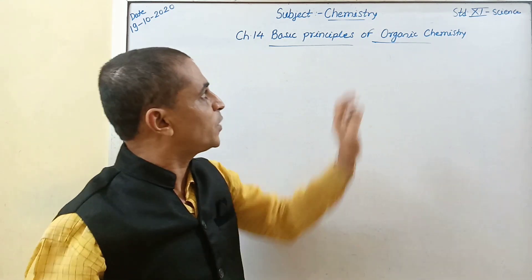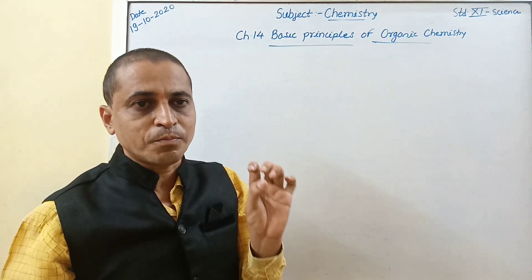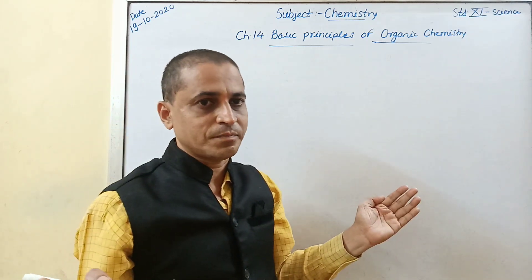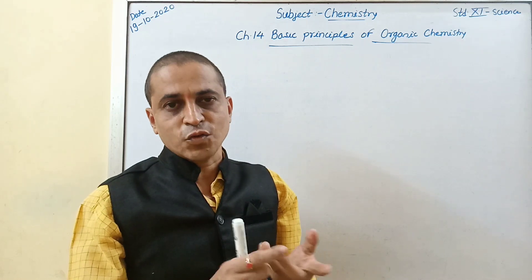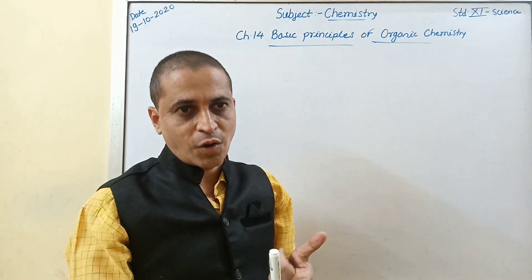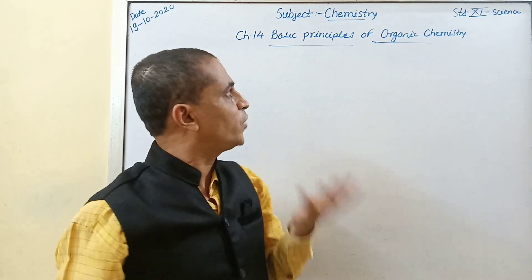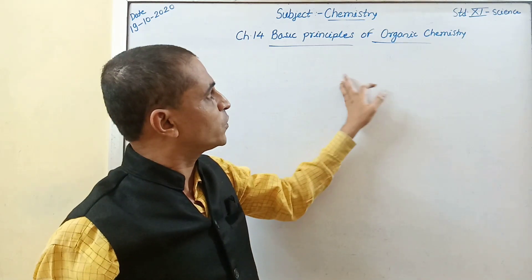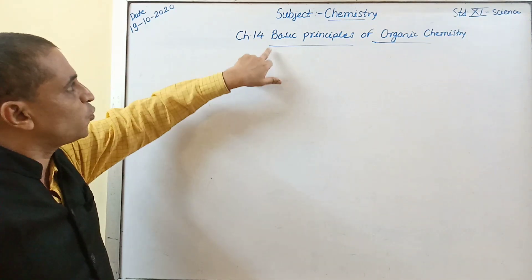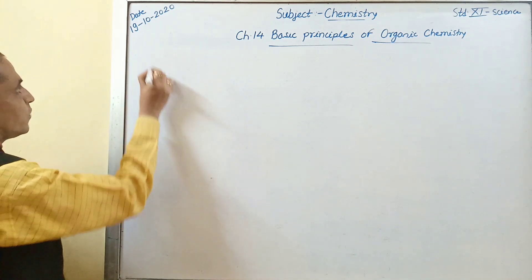Because of that unique property of carbon, organic chemistry is considered as a separate branch of chemistry and is very vast. You know that there are many things like toothpaste, soap, oils, clothes, medicines — all these things are related to organic compounds. We are going to study organic compounds in detail in organic chemistry. So first you must know about basic principles of organic chemistry, so let us start with this chapter.